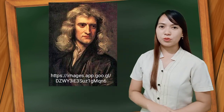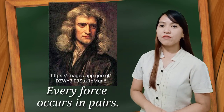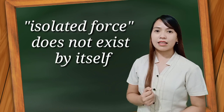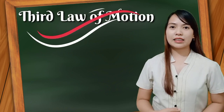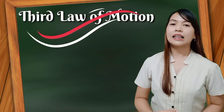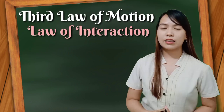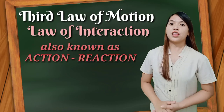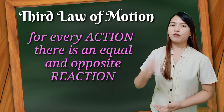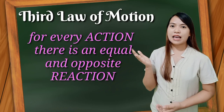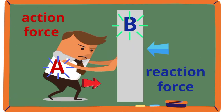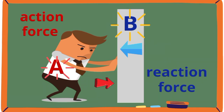Sir Isaac Newton realized that every force occurs in pairs, and an isolated force does not exist by itself. He therefore formulated the third law of motion, the Law of Interaction, also known as action and reaction. The third law can be briefly defined as: for every action, there is an equal and opposite reaction.